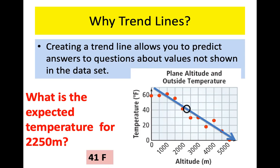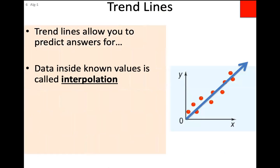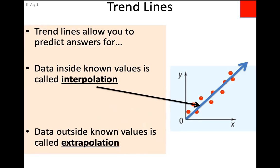Tonight for homework, they'll give you a scatter plot, you'll make a trend line, and they'll give you questions to use the trend line to make predictions. The line doesn't stop at the last dot — you can extend it. If they're asking you to predict something that happens between the existing dots, that's called interpolation. If they ask about something beyond the dots where there's no data, that's called extrapolation.